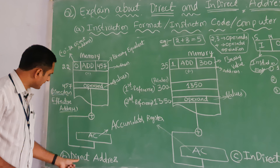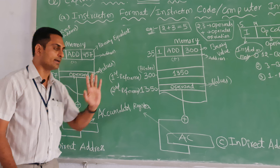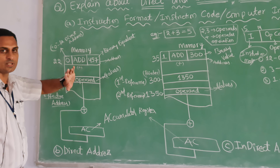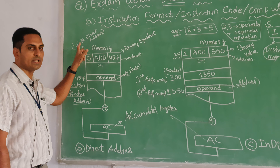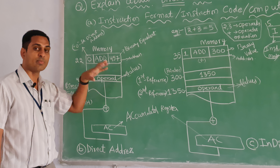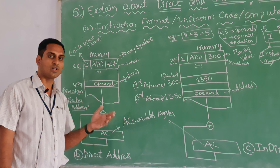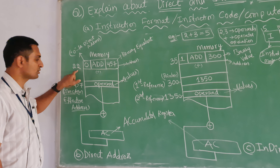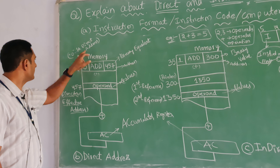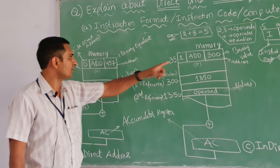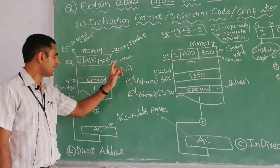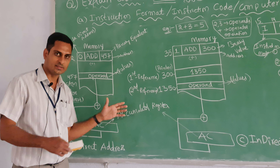Now coming to our topic. This diagram indicates direct address and that diagram indicates indirect address. This whole diagram is the memory part — either RAM or a register. Here, 0 indicates direct address. The value 22 is the address reference, shown in binary form inside registers and flip-flops. Here, ADD is the operation code, and 457 is the address field value.